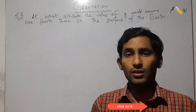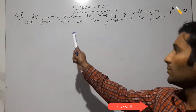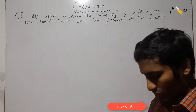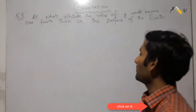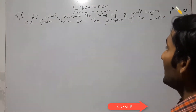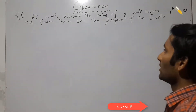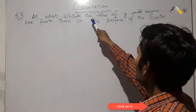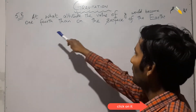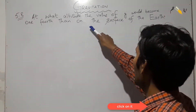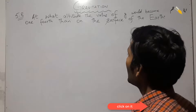Assalamu alaikum. Now I am going to solve American number 5.8. First of all we will read the statement: At what altitude would the value of g become one-fourth of that on the surface of the earth?